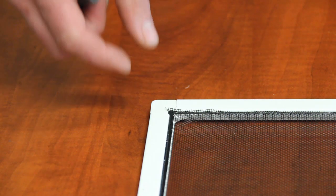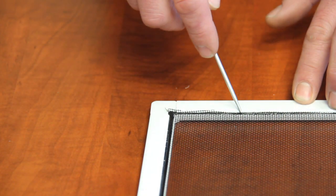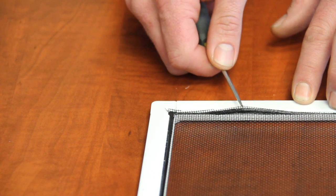To replace your screen tab in your old screen, pull the screen out and place it on a table. Then, using a pick or a small pointy object, pull